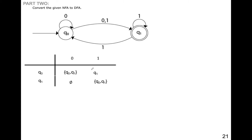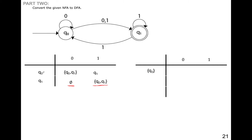To convert this transition table — or this transition diagram — I need to eliminate states going to more than one state, and ensure that a state will go to a state and not to an empty state. So we will create another transition table, starting one by one. With 0 and 1 as my alphabet, we take the first state Q0: for 0 it goes to Q0 and Q1, and for 1 it goes to Q1. Now I have a new combined state Q0Q1.